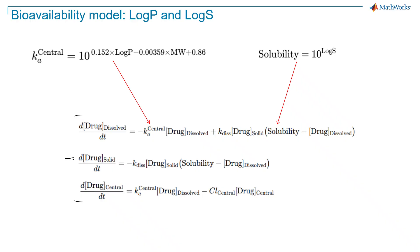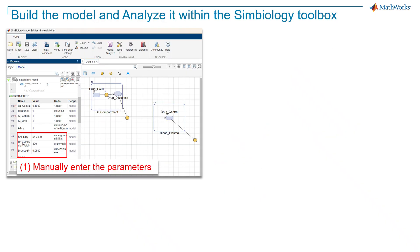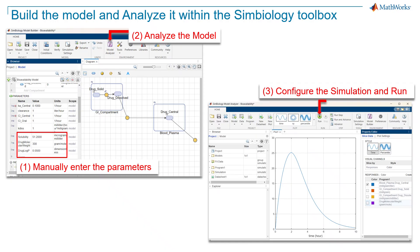The way that this system of equations relates to our cheminformatics result is through the implementation of those properties into these equations. We simply plug in log S, log P, and molecular weight into these equations as you can see here. To use this pre-built SimBiology model for a given drug, you can simply enter manually these values for solubility, log P, and molecular weights as parameters. You can then go to Model Analyzer, where you can configure and simulate it and see the result, which in this case is how the drug concentration in blood is changing over time.